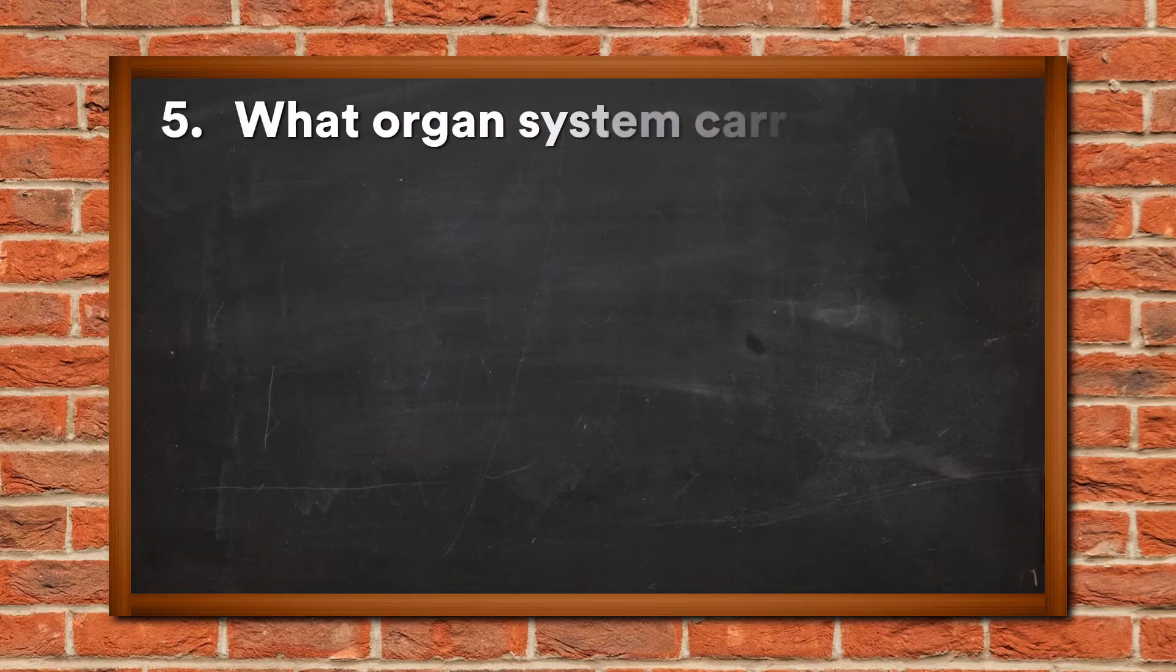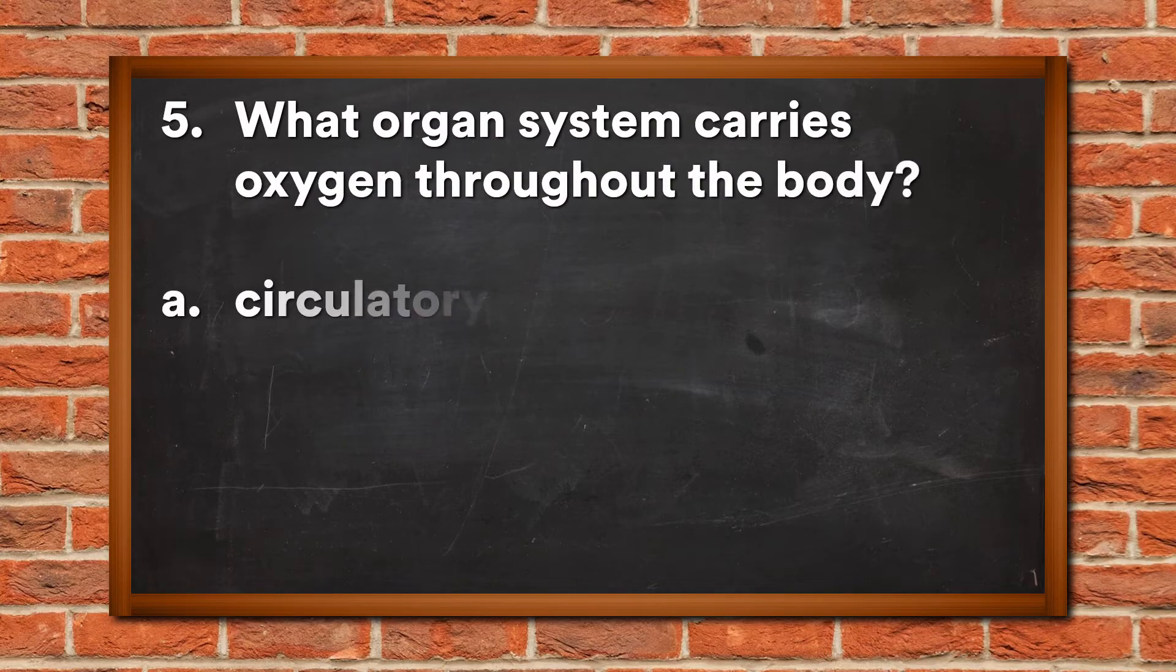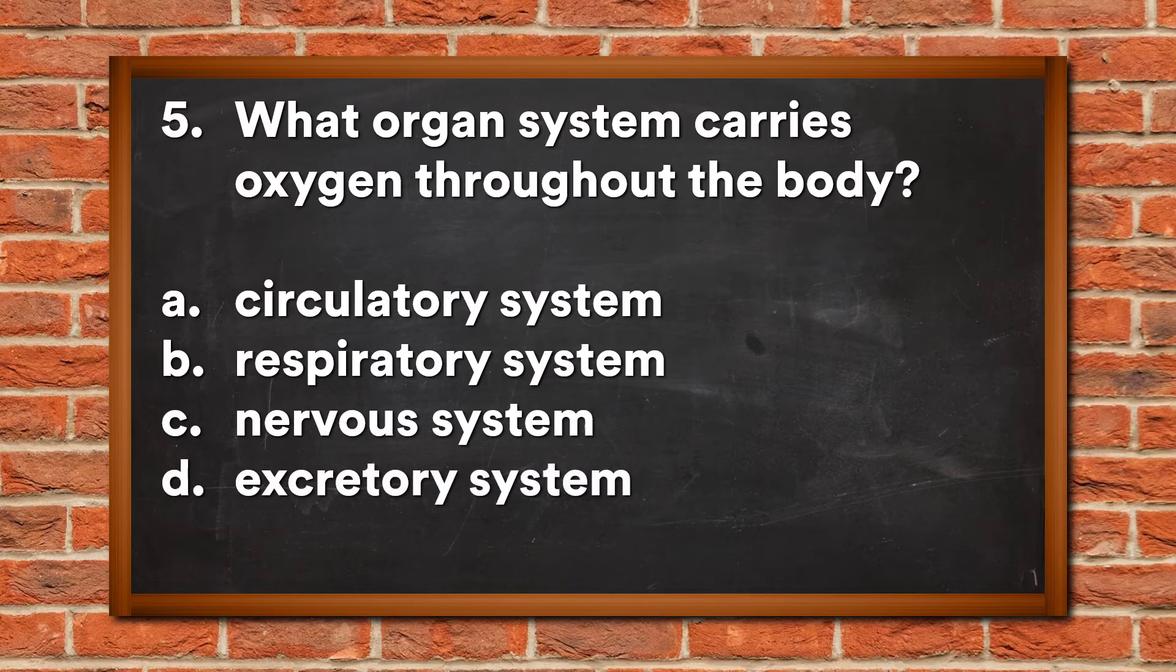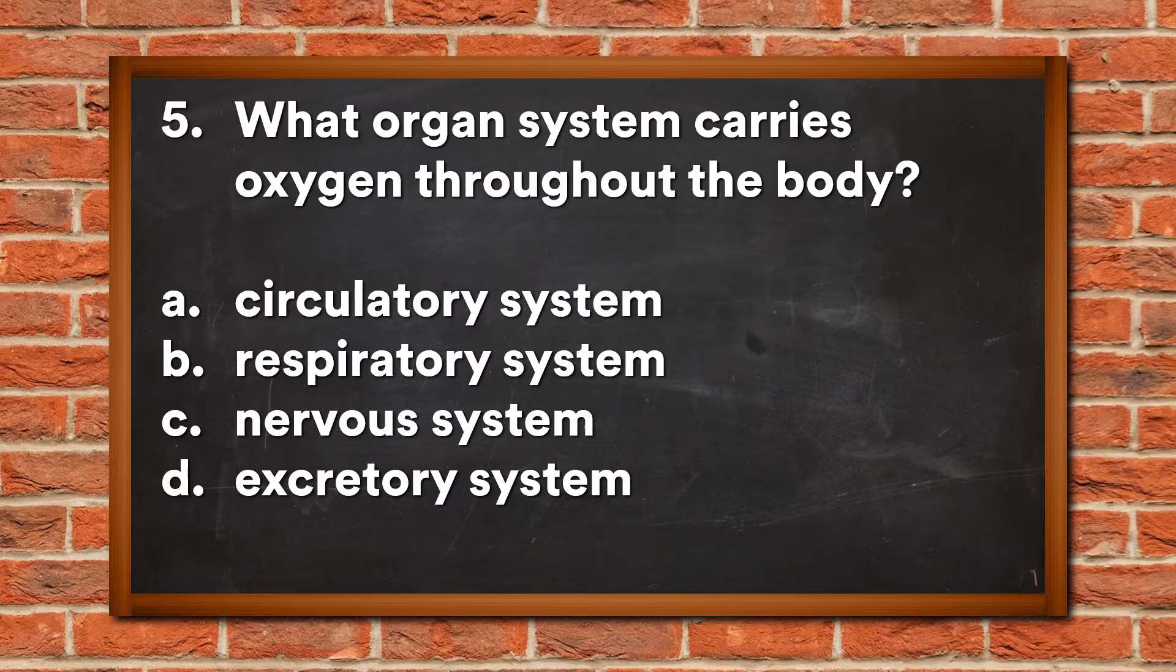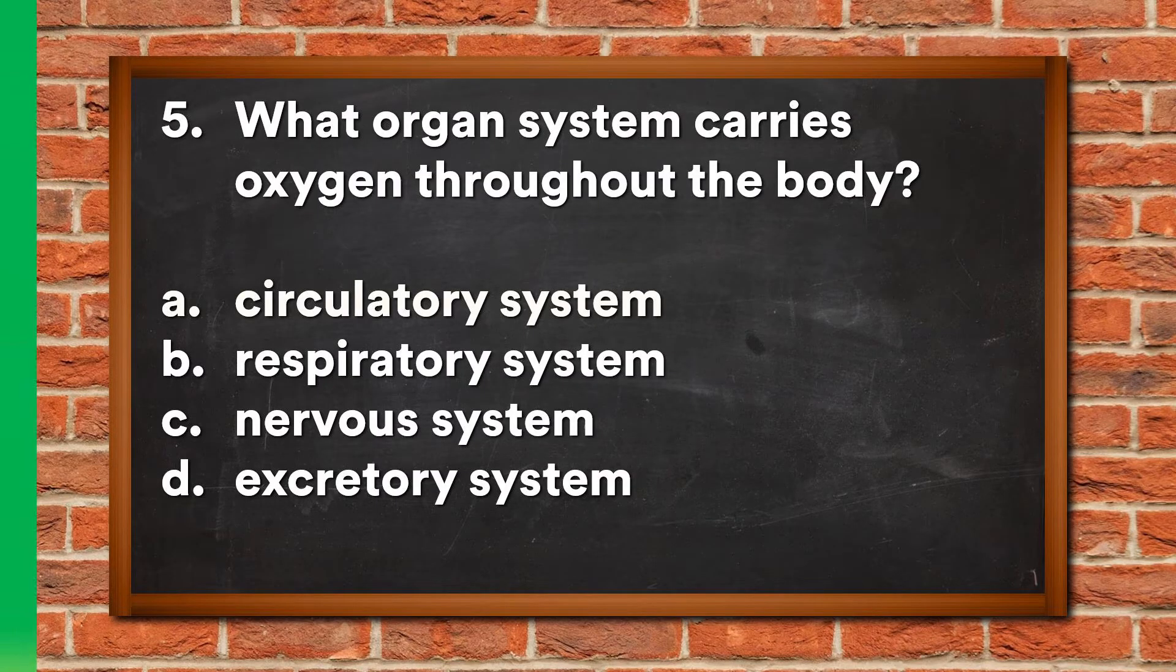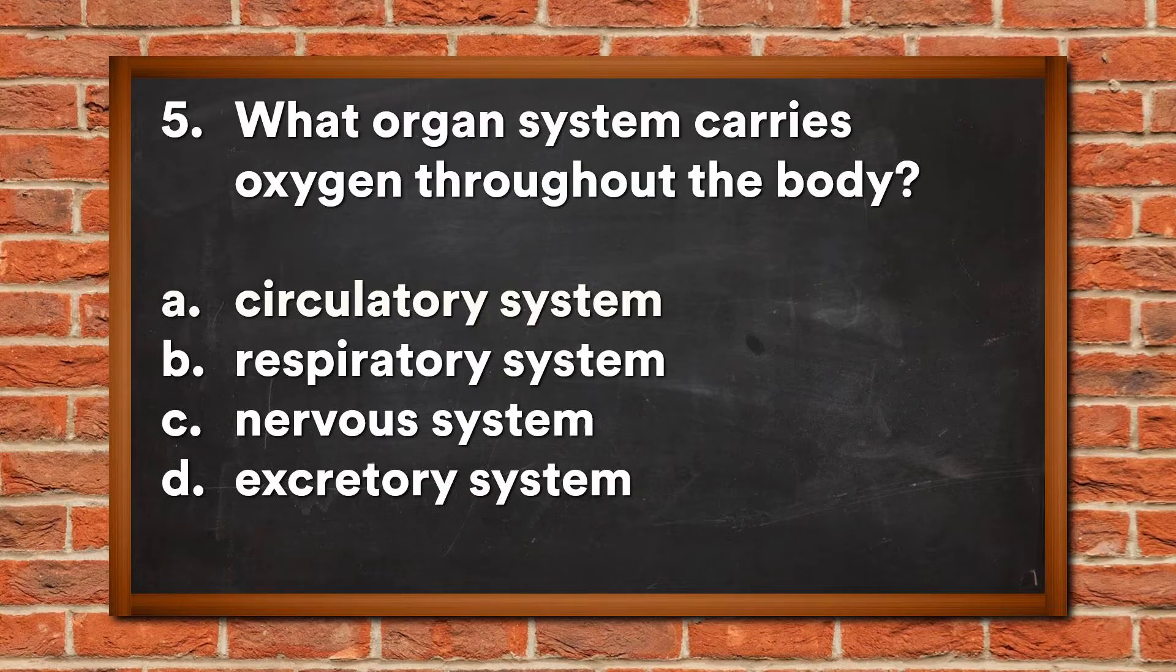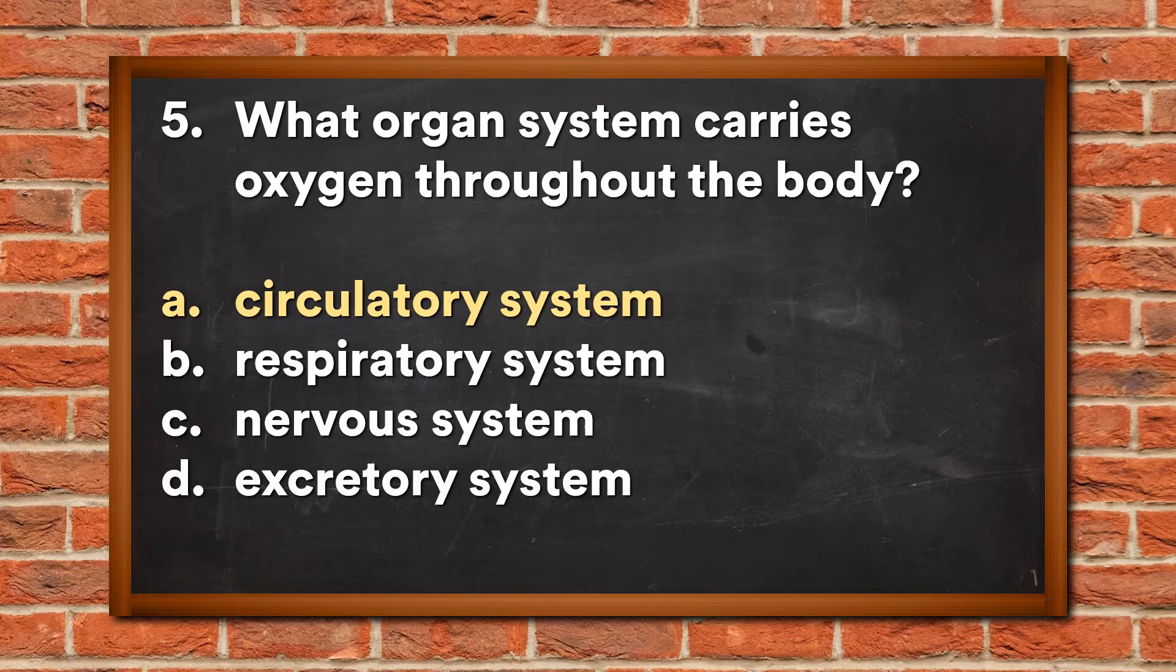Question 5: What organ system carries oxygen throughout the body? A. Circulatory system, B. Respiratory system, C. Nervous system, D. Excretory system. The answer is A, Circulatory system.